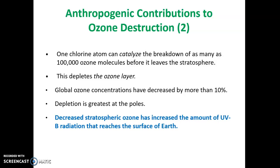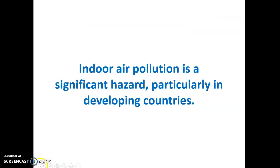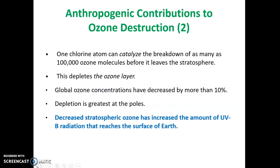When stratospheric ozone is decreased, the amount of UVB radiation in particular that reaches the surface of the Earth increases. That is harmful to human health in terms of producing cataracts, skin cancer, and sunburns.